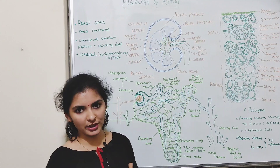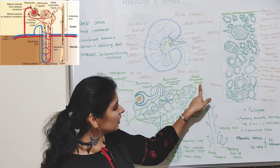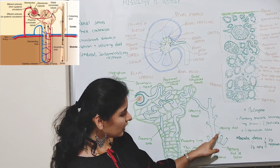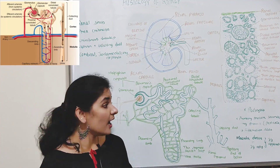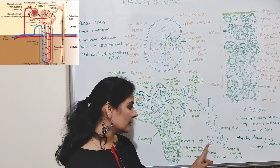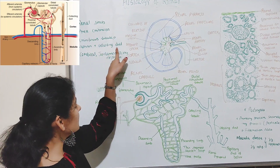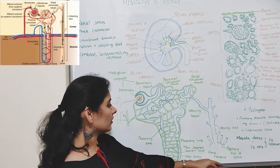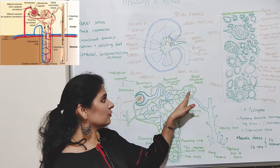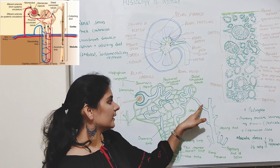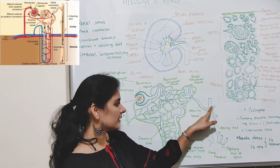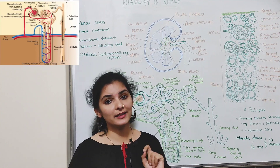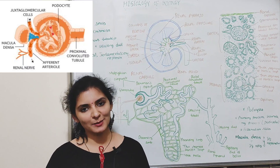The distal convoluted tubule leads to collecting tubules. Many collecting tubules from different nephrons join together to form a collecting duct. The collecting duct is not part of the nephron itself — the nephron plus the collecting duct together are called the uriniferous tubule. Urine from the distal convoluted tubule enters the collecting tubule, then the collecting duct, and empties into the minor calyx.